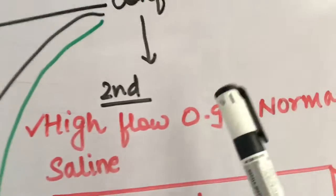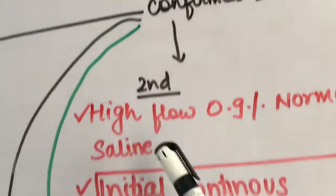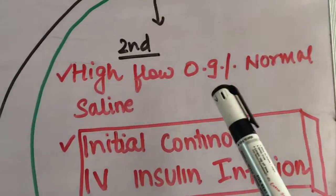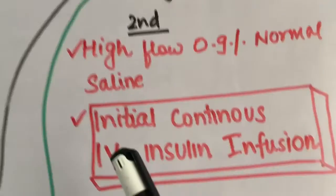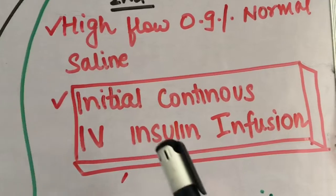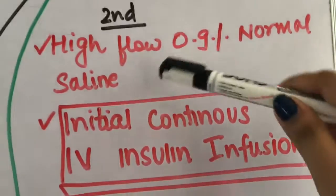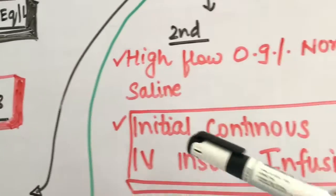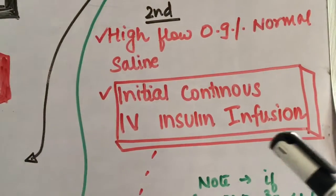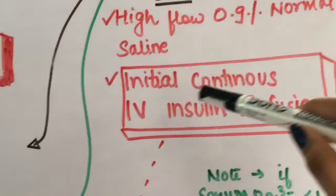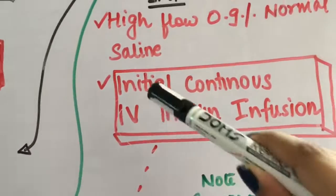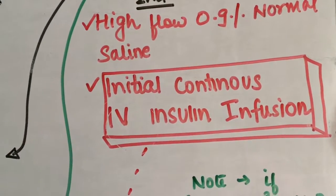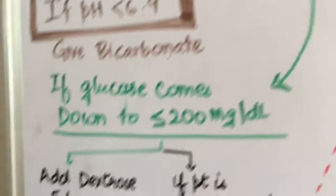Although it is the most important step I would say, start the patient with high flow 0.9% normal saline as well as start the initial continuous IV insulin infusion. Two things you have to start as soon as the patient comes: 0.9% normal saline as well as initial continuous IV insulin infusion. Now with the IV insulin I must tell you one thing, that first of all you will start with IV insulin, but as soon as the glucose level comes down to less than 200...